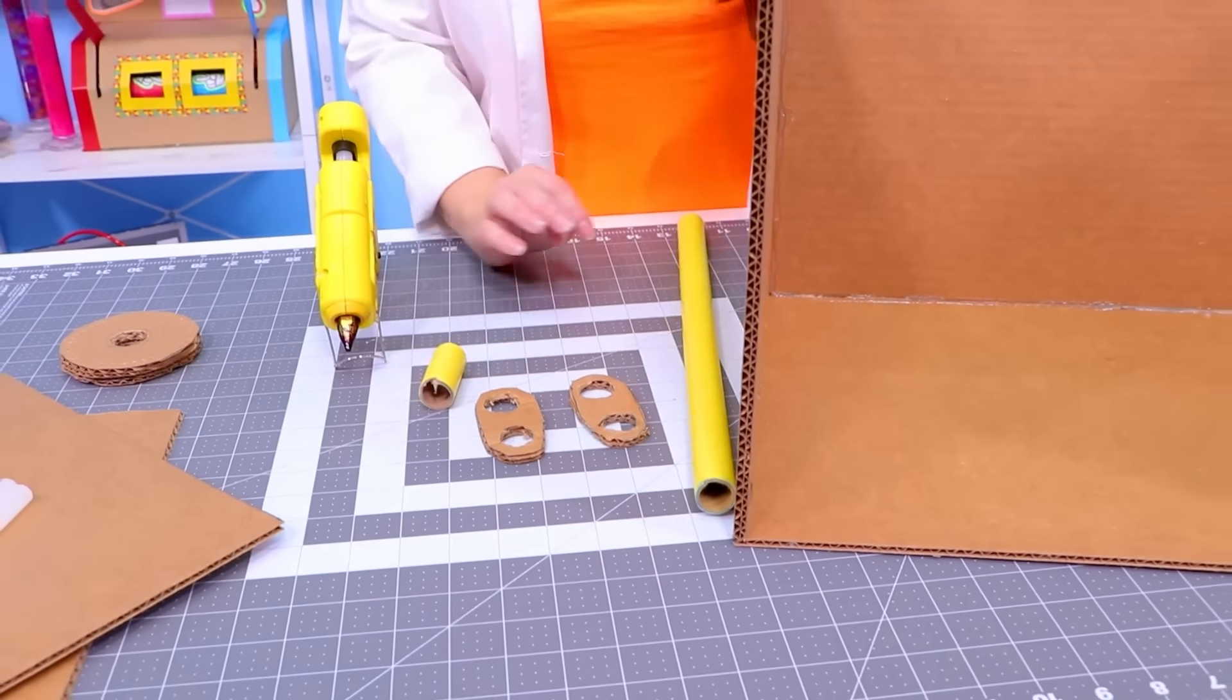Now we're gonna glue our handle piece onto the cardboard. We need a good seal, so we need lots of hot glue all the way around! And glue it nice and tight in place, like that!